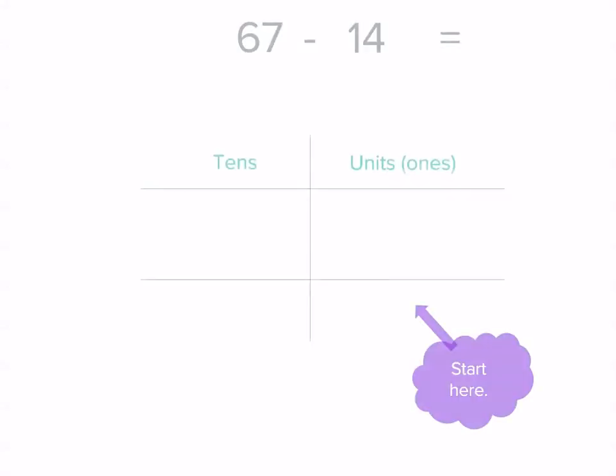Now, this time, we've got larger numbers. Both our numbers have 2 digits. Remember, we always start subtracting from the units place. Now, let's write our numbers in.